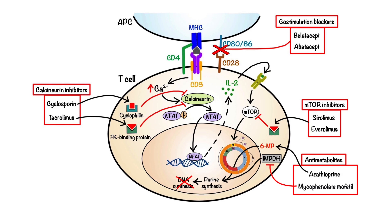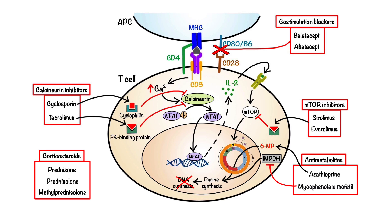Another class of drugs often used for immunosuppression in both transplantation and various autoimmune disorders is corticosteroids. Drugs that belong to this class include prednisone, prednisolone, and methylprednisolone. The effects of corticosteroids are diverse and controlled by several mechanisms. One mechanism is through regulation of T-cell responses: acting directly on T cells, corticosteroids bind to the intracellular glucocorticoid receptor, resulting in translocation of the complex to the nucleus and subsequent inhibition of key transcription factors such as nuclear factor kappa-B and activator protein-1, which ultimately represses pro-inflammatory genes. Additionally, corticosteroids exert non-genomic actions by causing rapid dissociation of T-cell receptor-associated protein complexes, resulting in impaired receptor signaling and T-cell activation.